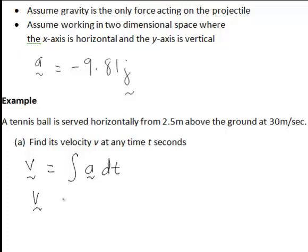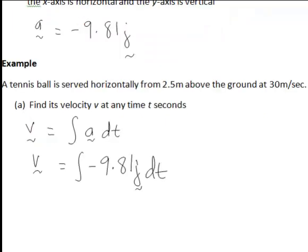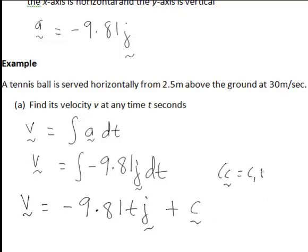In other words we'll be integrating the acceleration with respect to time t where the acceleration was of the form negative 9.81j. Hence working out this integral is going to give us v equal to negative 9.81t times j plus a constant vector c. Because we're talking in two-dimensional vectors the constant vector c has both a component c1i and another component c2j.